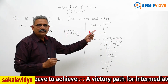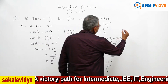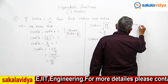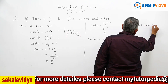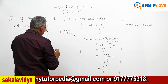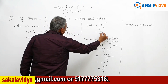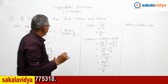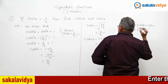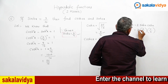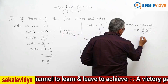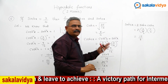Now let us move to find sinh(2x). sinh(2x) is nothing but 2·sinh(x)·cosh(x) — this is the basic identity. sinh(x) is 3 by 4, cosh(x) is 5 by 4. Substituting: 2 multiplied by 3 by 4 multiplied by 5 by 4. So we get 3 times 5 is 15, 2 times 4 times 4 gives denominator 8, so sinh(2x) = 15 by 8. Both values have been determined.